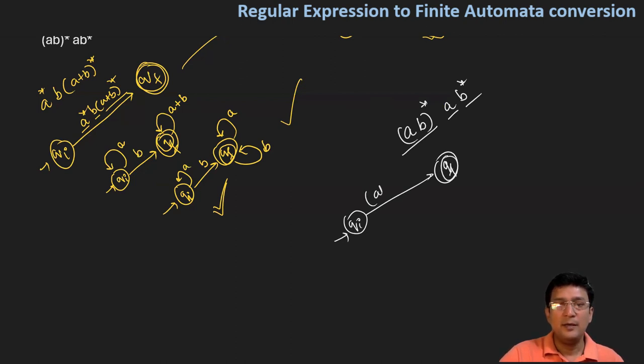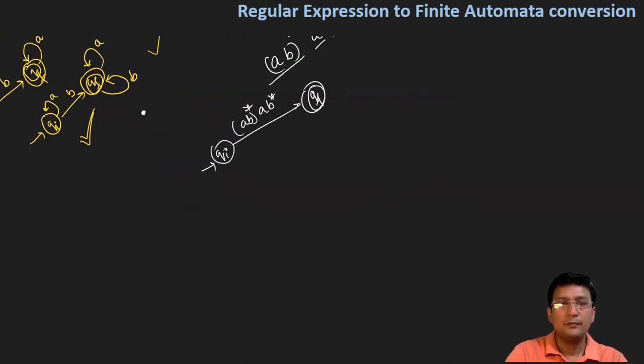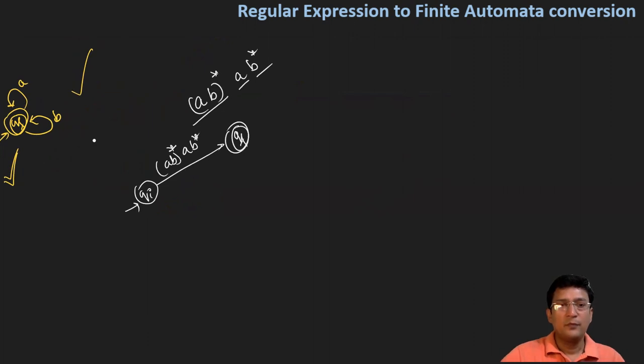For the complete regular expression expanded: first component (AB)* has initial state with AB self-loop. Single AB symbol to next step move to final state, which has b self-loop for the AB* component.